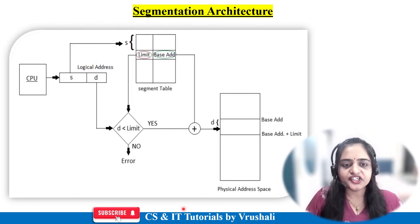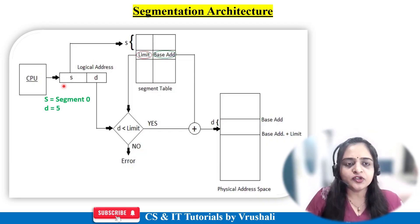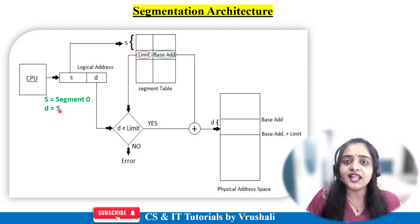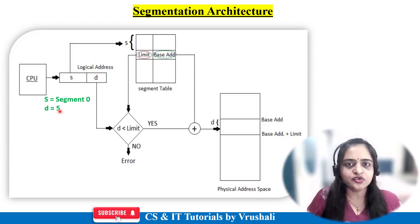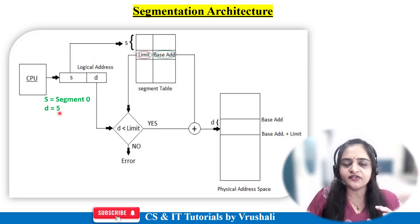This is the segmentation architecture diagram. The CPU is connected with logical memory — it interacts with logical memory. Assume that CPU wants to execute segment 0, line number 5. Here, S indicates segment 0 (the logical address) and D indicates line number 5 in segment 0. Assume there is a Java program with a total of 10 lines of code. So S indicates the logical address of segment 0 and D indicates line number 5.